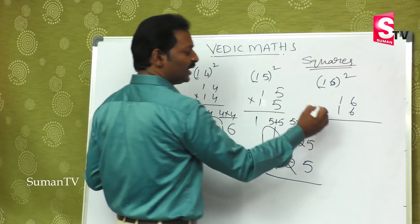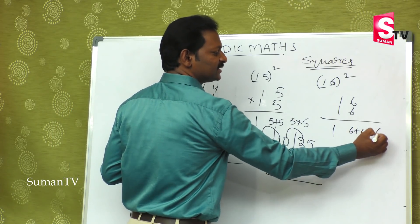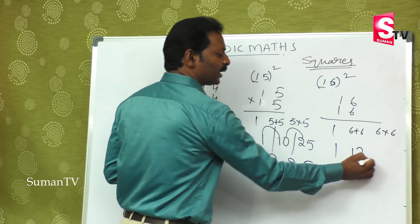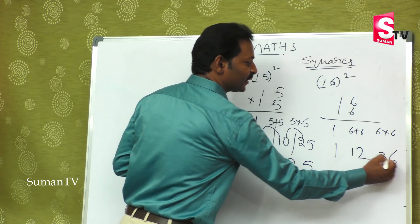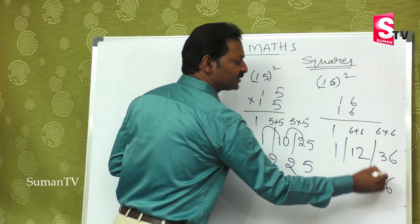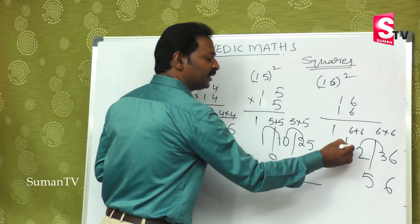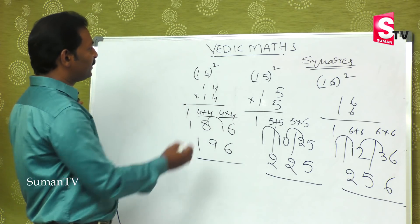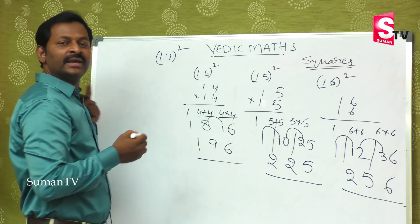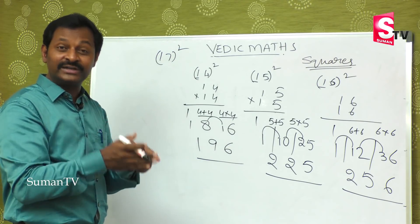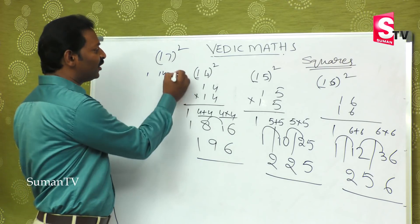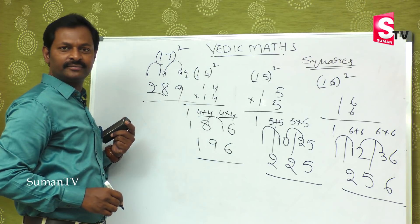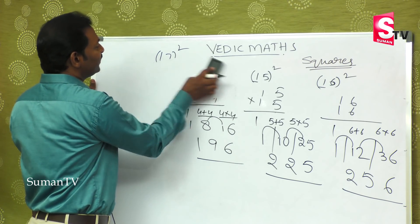For 16-square: one remains the same, six plus six is twelve, six into six is thirty-six. On balancing: nine remains, carry balances to eight, carry balances to two — so the final answer is two hundred and eighty-nine.